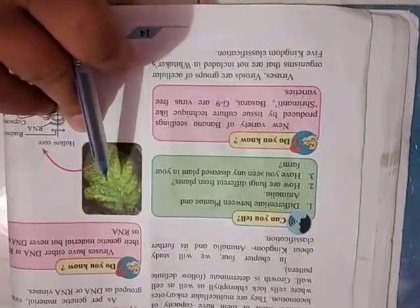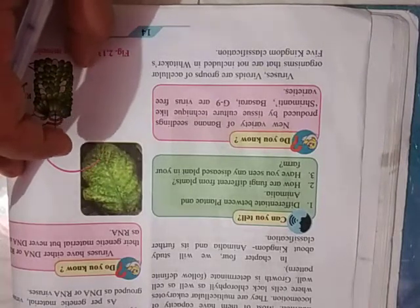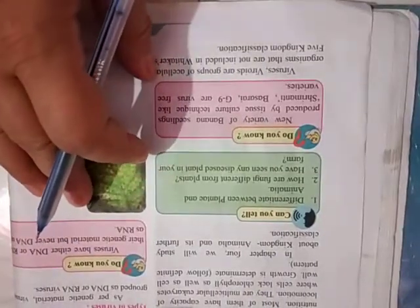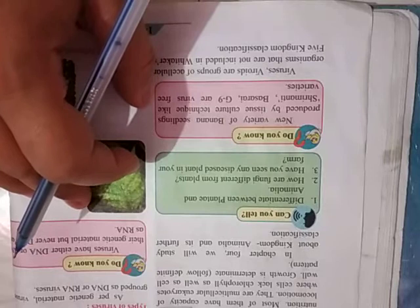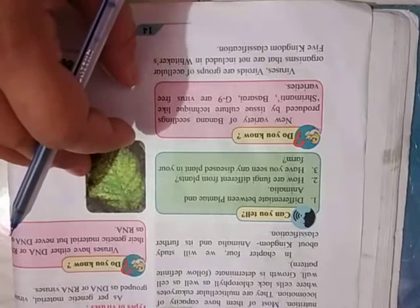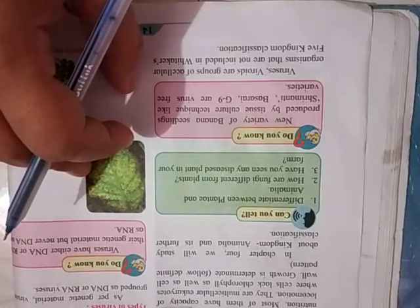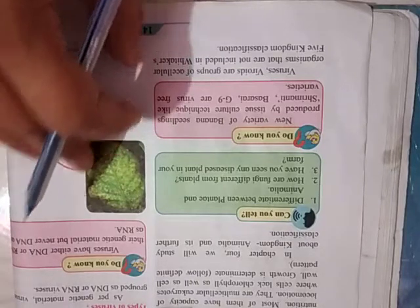Viruses and viroids are groups of acellular organisms that are not included in Whittaker's five kingdom classification. These are groups of acellular organisms not included in Whittaker's five kingdoms, but we have to study what these acellular organisms are. In the next video, we will discuss about these acellular organisms, in which we will discuss viruses, viroids, and lichens. See you in the next video. Goodbye.